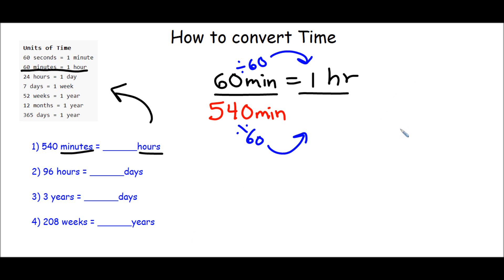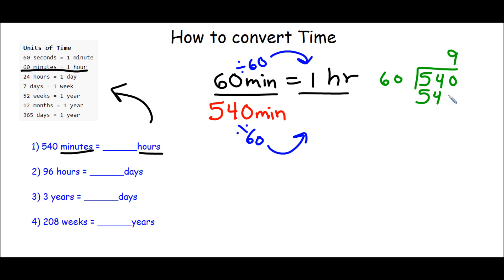Let's go ahead and do that math on the side. We have 540 divided by 60. I know that 6 goes into 54 nine times, so 60 is going to go into 540 nine times as well. So 9 times 60 gives me 540. We subtract and we're done. That means there are 9 hours in 540 minutes, so we write down 9.